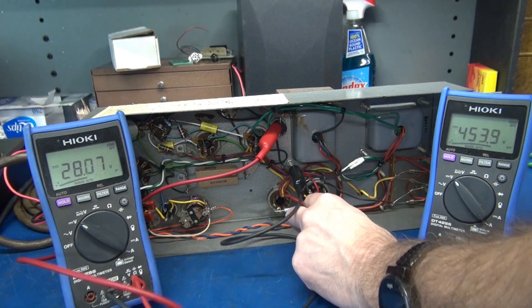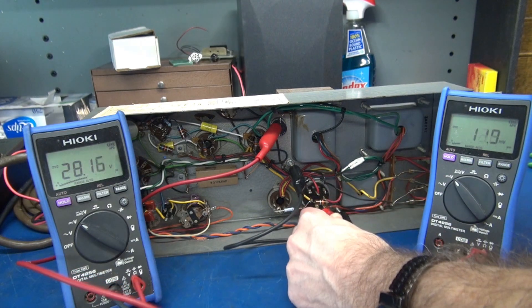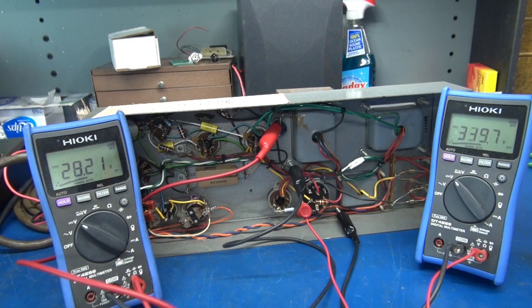Now I'm going to switch that lead. We're going to look at the screen voltage coming off of the OC3 regulator.